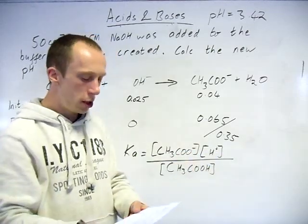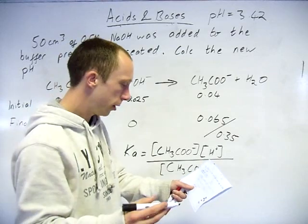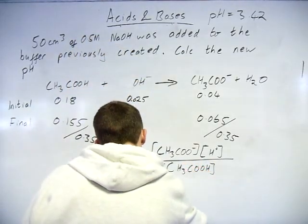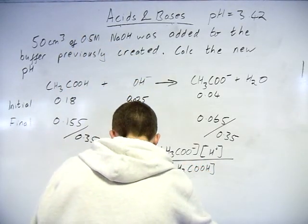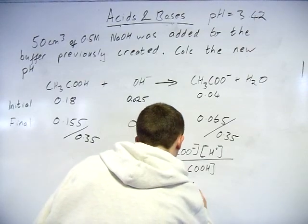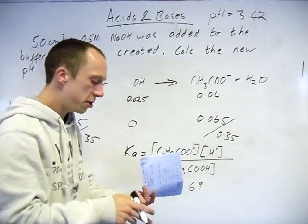And again, hydrogen ion pH equals minus log concentration of that. And if you can do those, then again, numbers scribbled on my sheet, 3.69.